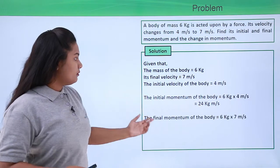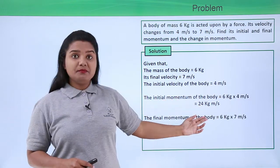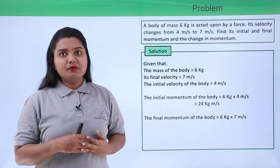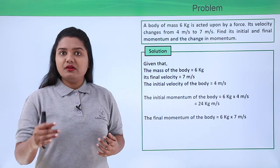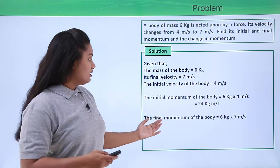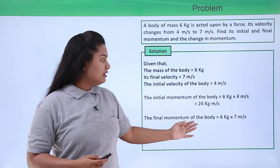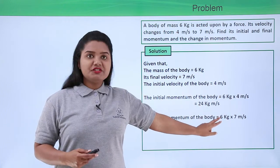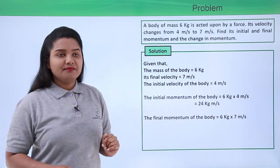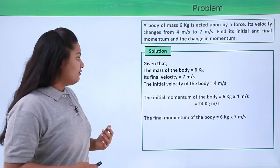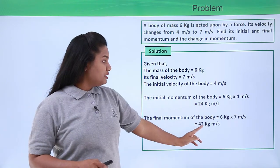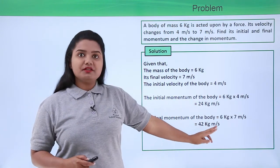The final momentum of the body is given by the multiplication of the mass of the body and the final velocity. So the final momentum is 6 kg multiplied by 7 meters per second, which gives 42 kg meters per second.